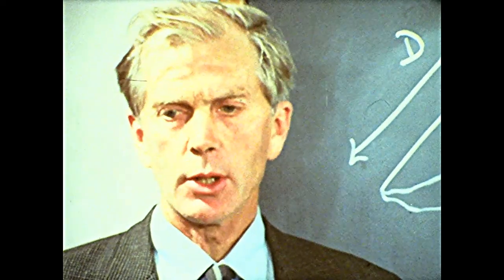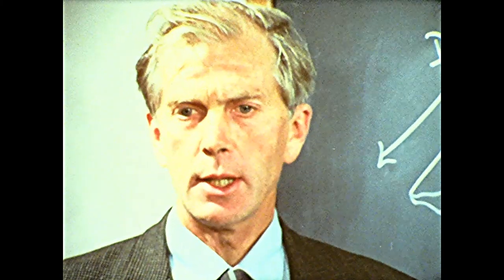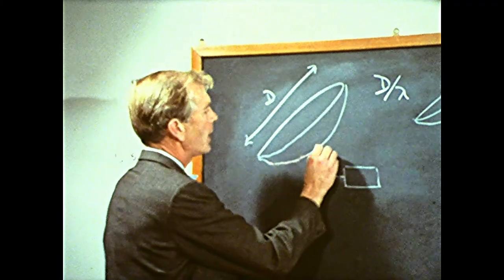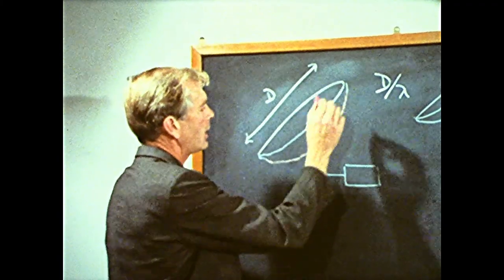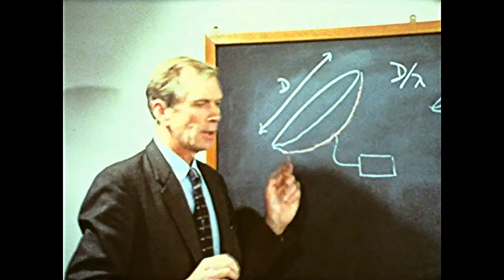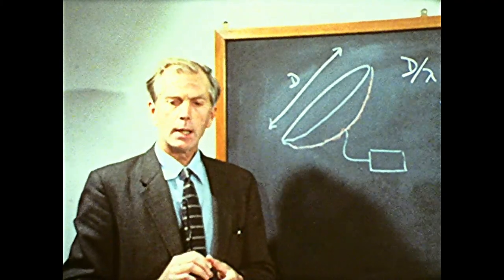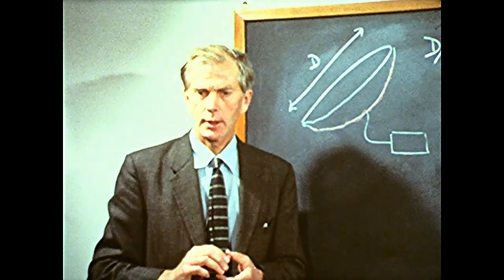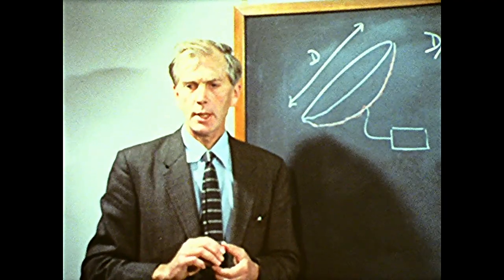The shortest wavelength at which we can use our dish depends on the accuracy with which the surface is a true paraboloid. And in practice, there will be deflections caused by the weight of the structure and the forces of the wind which will cause errors in our surface. And if these errors are more than about 1/20th of the operating wavelength, our dish will not make a proper image.